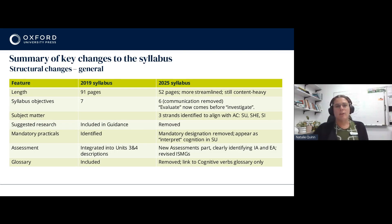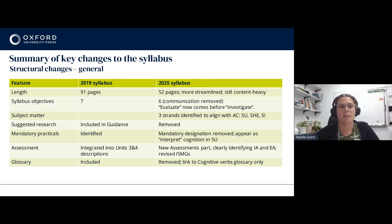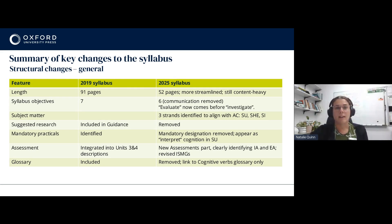This is just an overview of the large structural changes to the entire syllabus. You can see the 2019 syllabus version versus the 2025 syllabus on the right. The first thing we notice is that it's a lot shorter — it's been cut back from 91 pages to 52 pages. It's still content heavy but more streamlined. In terms of the syllabus objectives we've gone from 7 to 6 because communication has been removed, and there's been some reshuffling — for example, evaluate now comes before investigate.